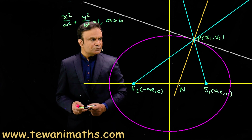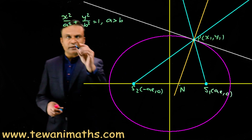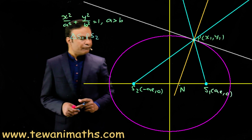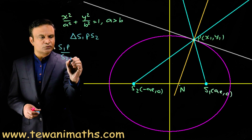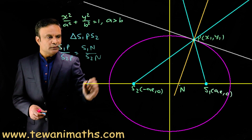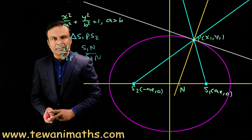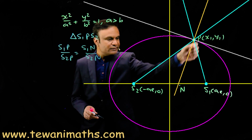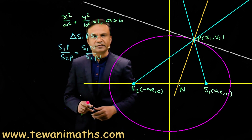Let us prove this property. I need to show that S1P / S2P = S1N / S2N. This is the property of the internal angle bisector of a triangle: the internal angle bisector divides the opposite side in the ratio of the adjacent sides.